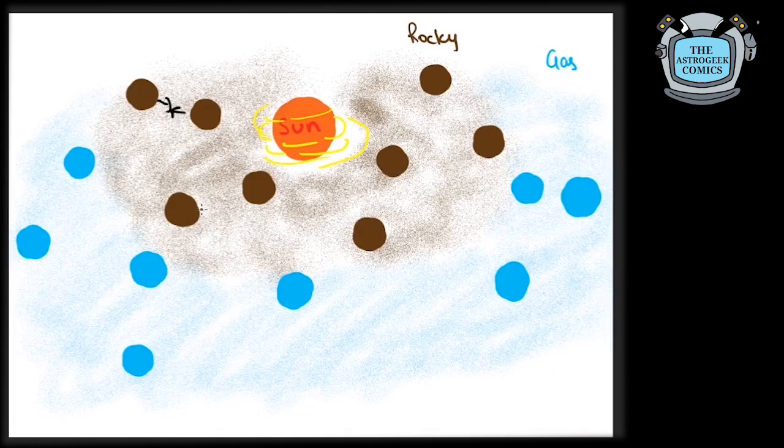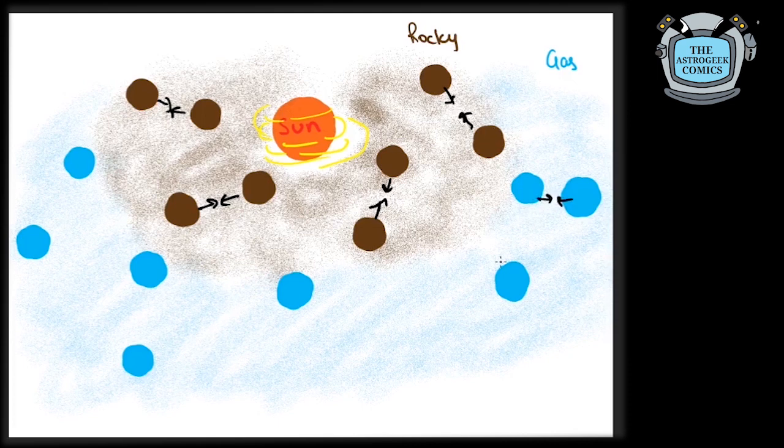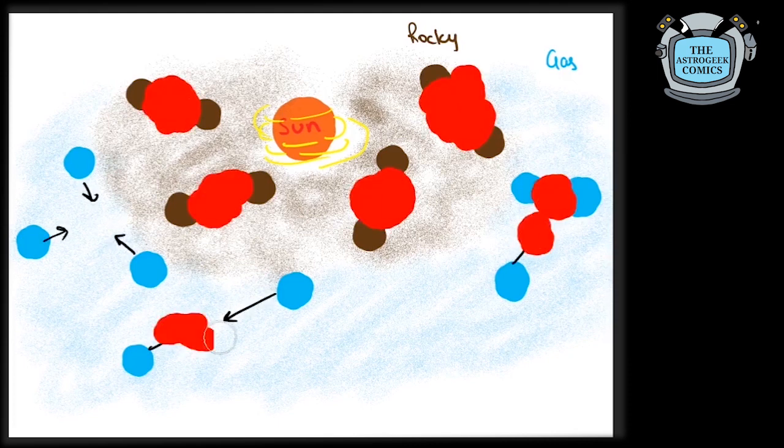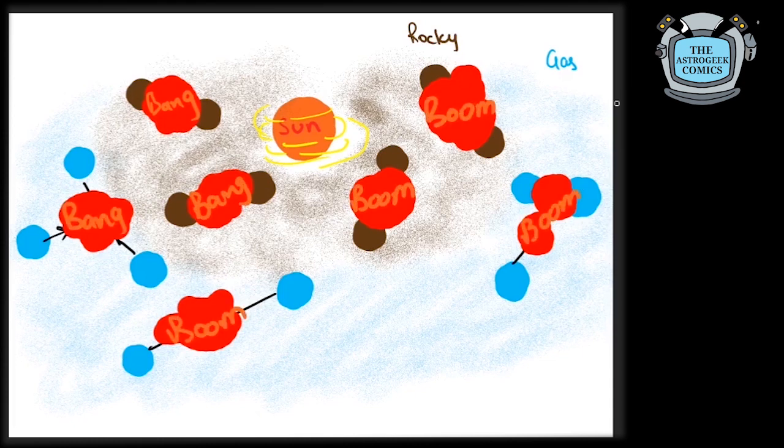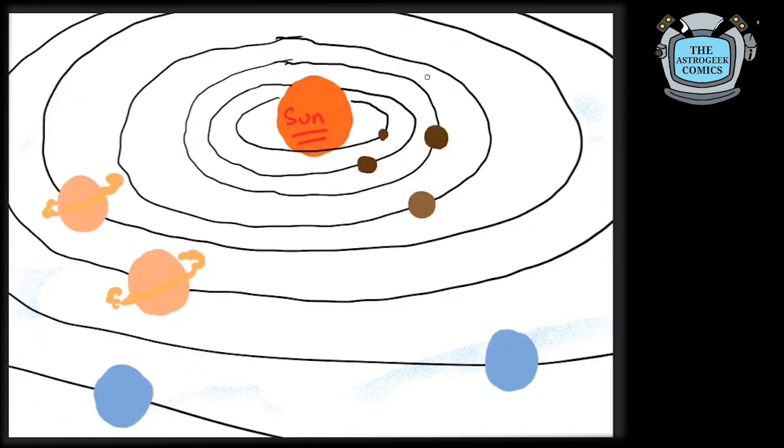After reaching a certain size, these protoplanet clumps stopped collecting more material and began collapsing with each other to fuse, merge and create bigger planets as we know them today. This cleared out most of the materials spread out in our solar system and planets slowly settled into stable, almost circular orbits.